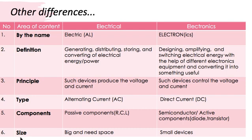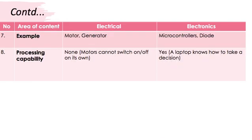Because of the difference in power consumption, the size also tells the same story. Electrical devices are pretty big and need a lot of space, whereas electronic devices are pretty handy and require less space. Being an era of nanotechnology and microtechnology, electronic devices certainly come in handy. A common example of electrical devices can be a motor or generator, and some examples of electronics are microcontrollers and diodes.